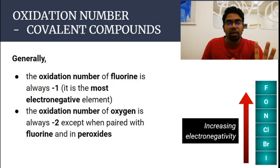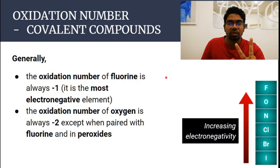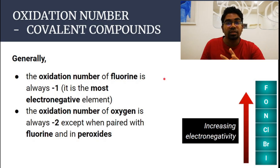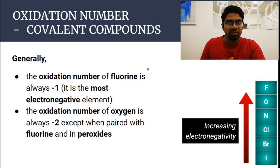Oxidation number can only be determined when an element is in a compound. In the free element state, it is zero. For example, two chlorine atoms have the same electronegativity — neither is more electropositive or electronegative than the other — so we cannot assign any oxidation number other than zero. Don't worry if you didn't get that; it's some extra information.